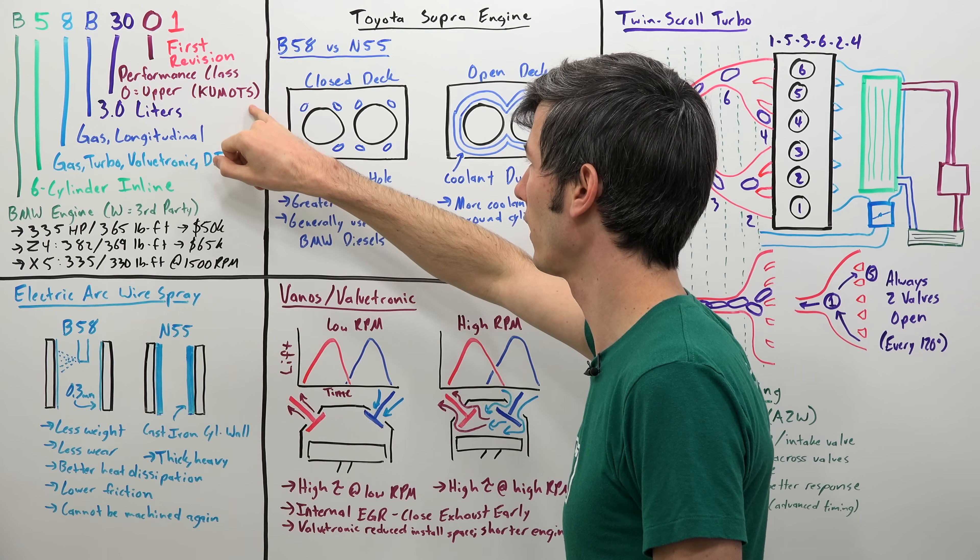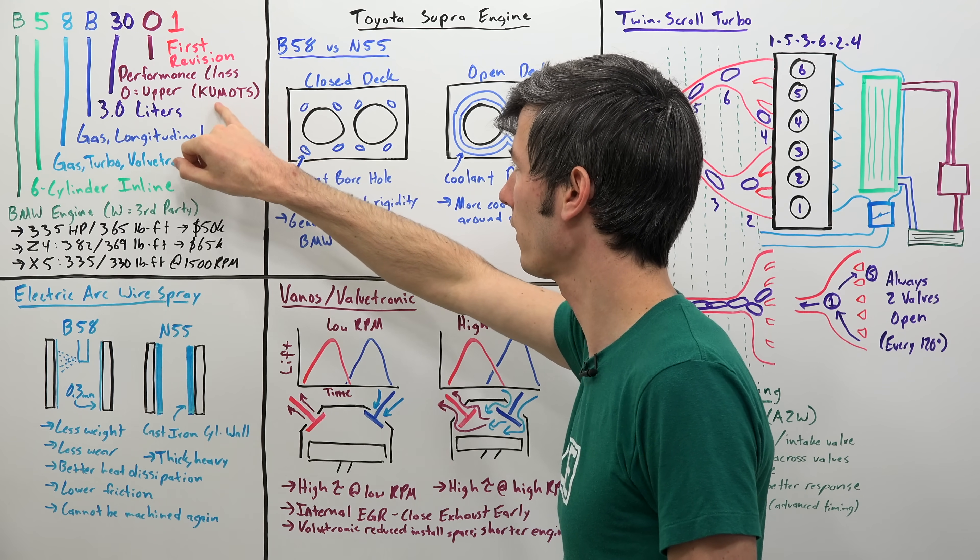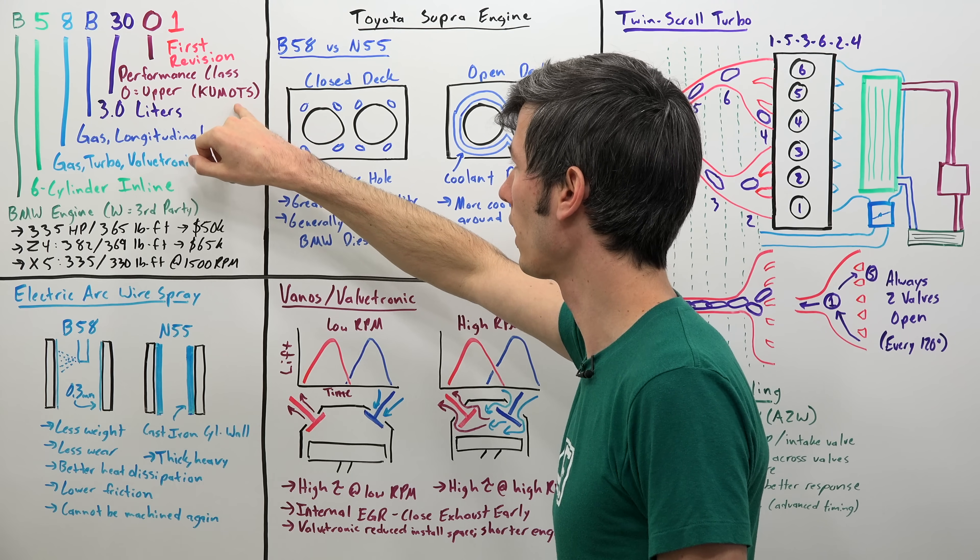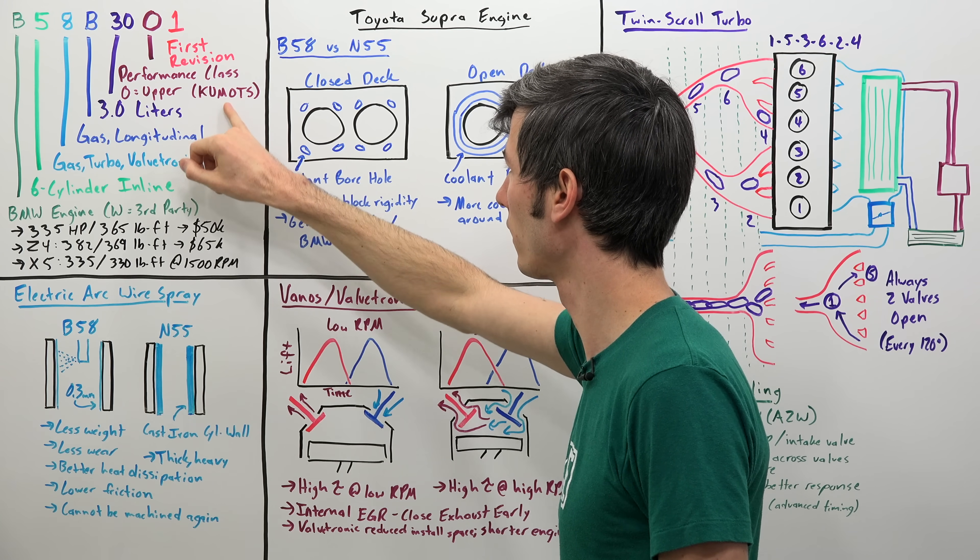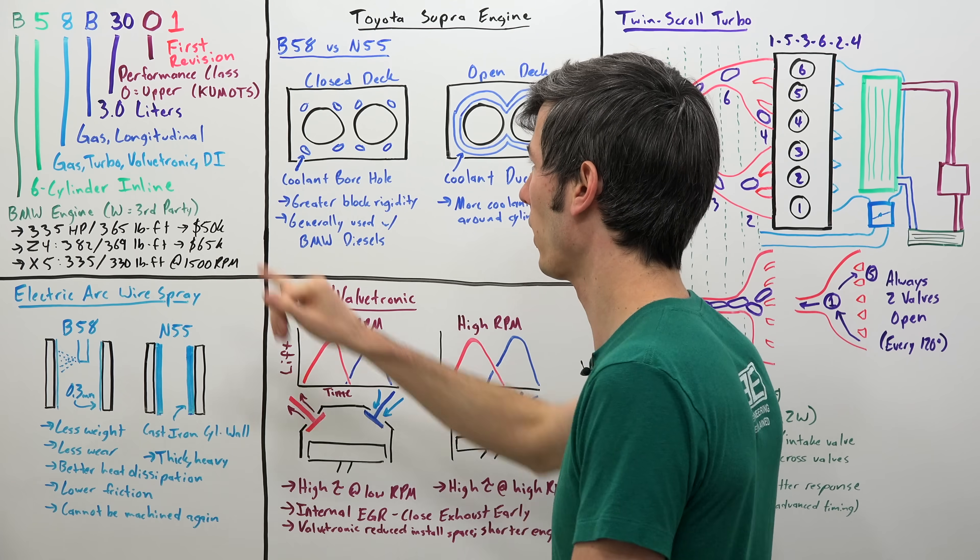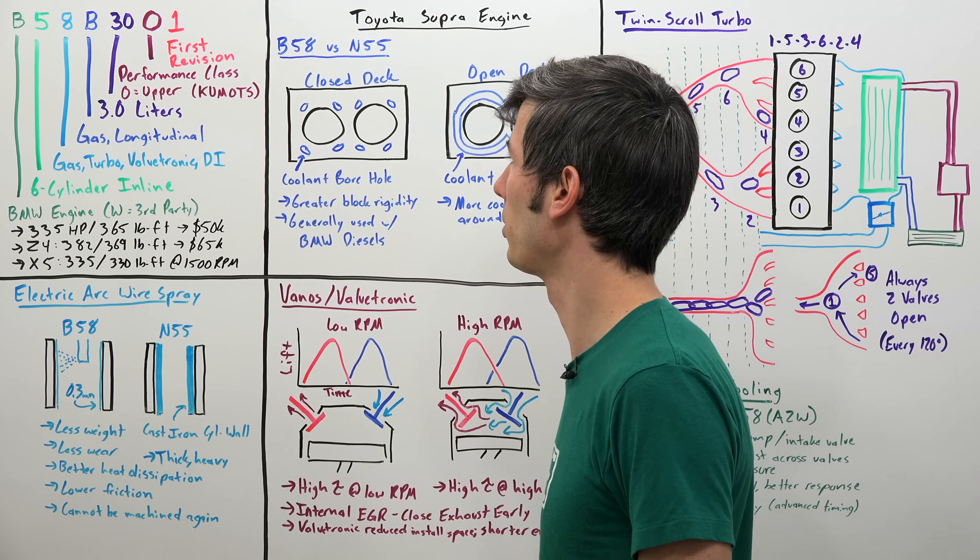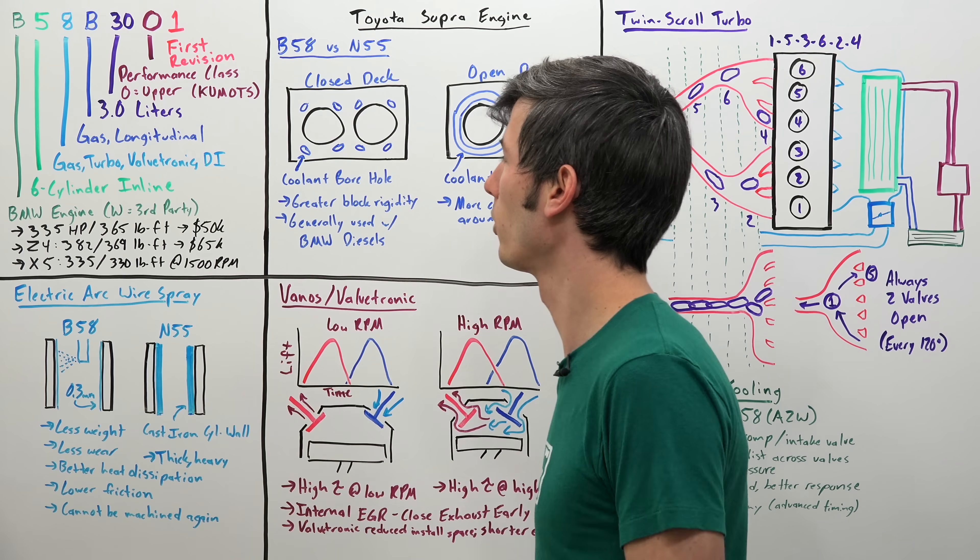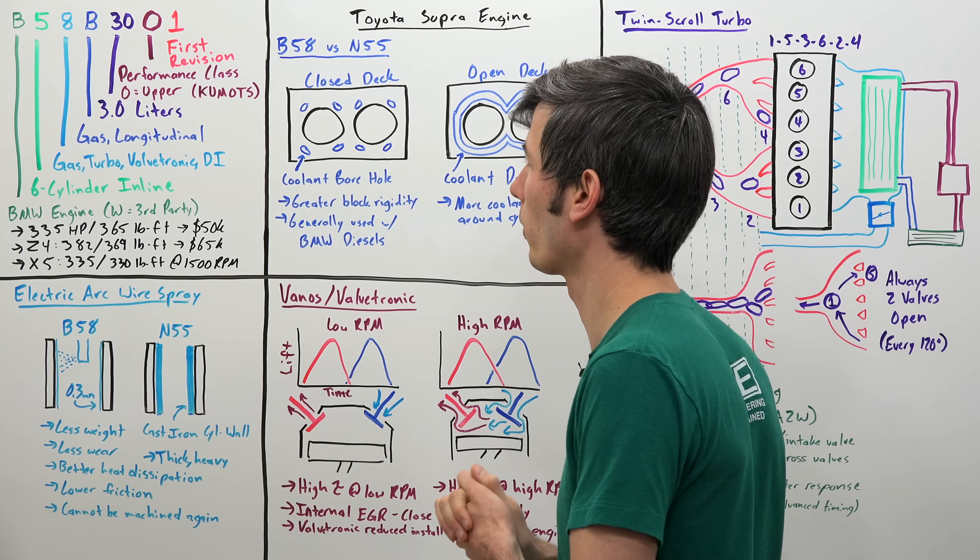The O is its performance class. So BMW has a performance class scale from K all the way to S. There's six different classes and the O is the upper scale, not quite in the dead center, but there's six classes and O is considered upper, S being the top, K being the bottom. And then 1 is the revision number, so it is the first revision of it.